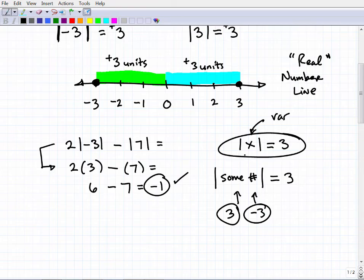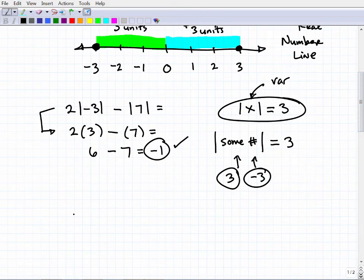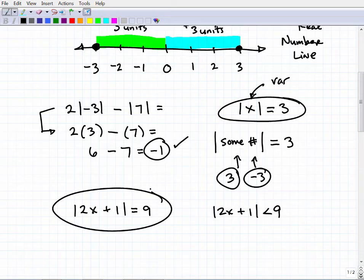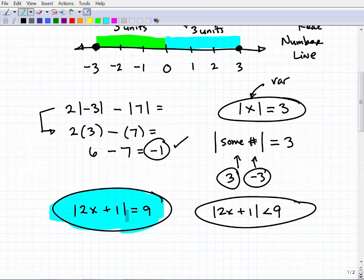Always two solutions to absolute value equations. There's always going to be two solutions. Now, real quick, I'm going to just write something out. 2x plus 1, absolute value of 2x plus 1 is equal to 9, and absolute value of 2x plus 1 is less than 9. Okay, so I have an absolute value equation and an absolute value inequality. I'm not going to get into these, but I want to make a point as we wrap up this video. Both of these look pretty similar. However, the way we solve them is completely different.